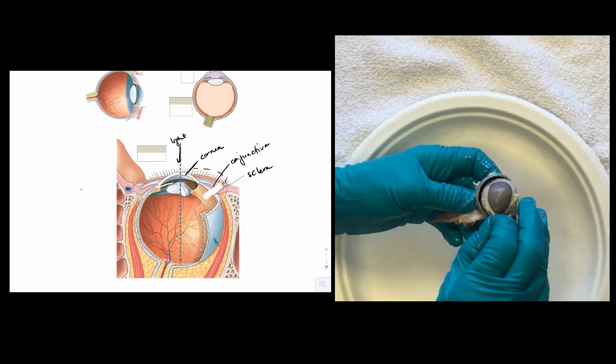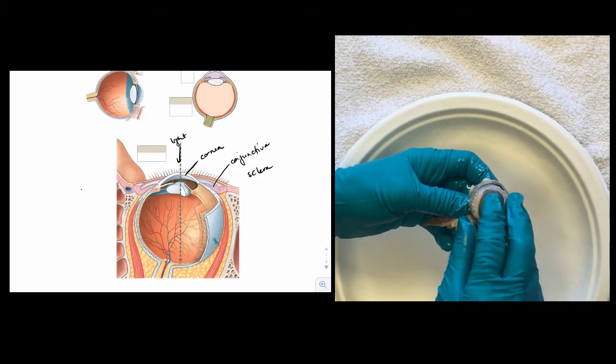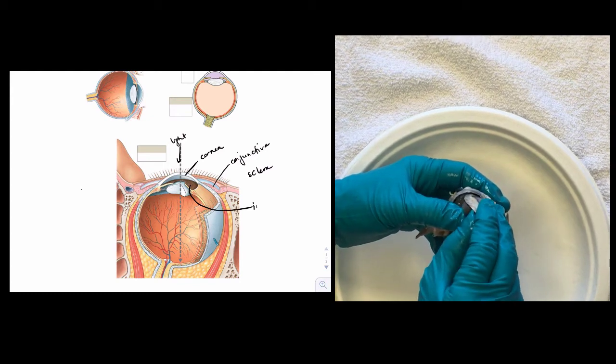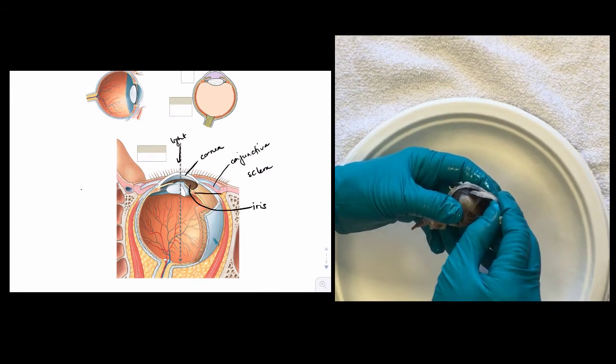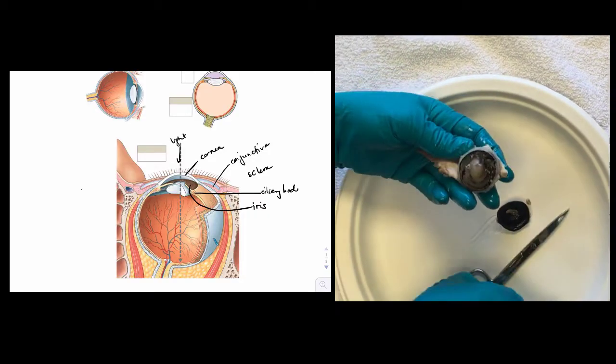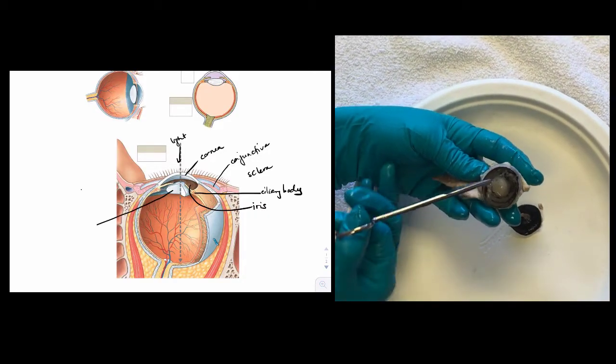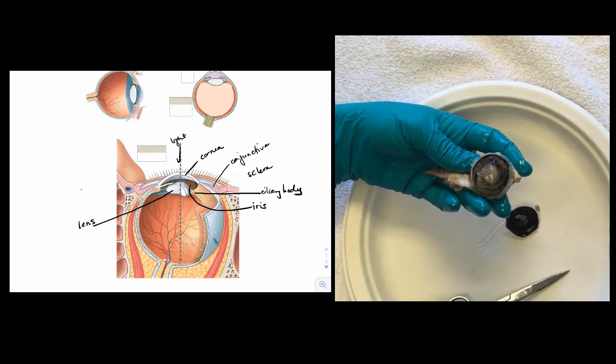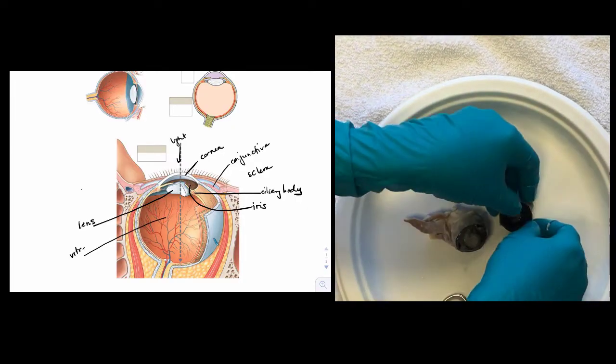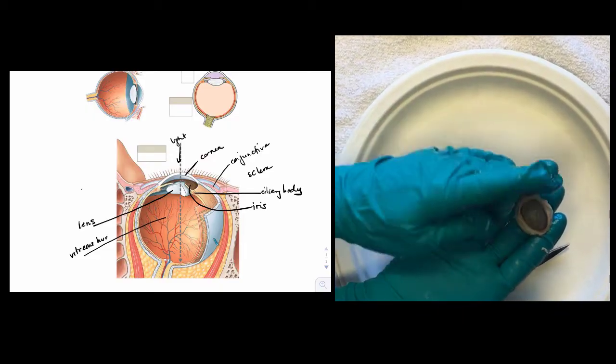Then you can open the eyeball like a book and lift the cornea. On the underside of the cornea, the iris and a portion of ciliary body will remain attached. If you do this carefully, the lens and vitreous humor will stay behind. Place the back of the eye down for a moment and we'll view the cornea and the structures behind it.